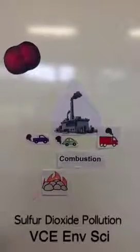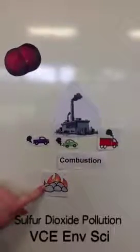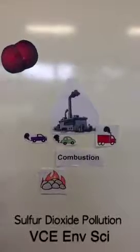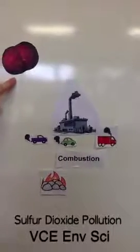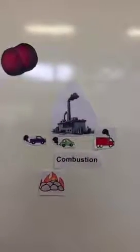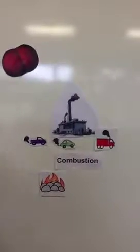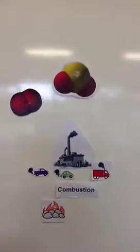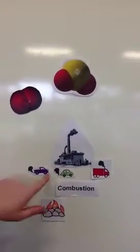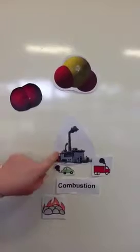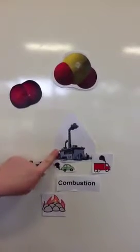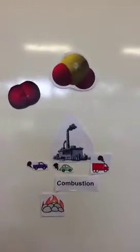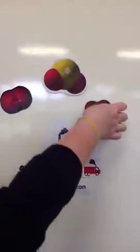When there is sulphur in coal that is burned for electricity production, the sulphur combines with oxygen in the air to produce sulphur dioxide. This is also true for the combustion of oil for transport and industry purposes. This in turn combines with more oxygen to produce sulphur trioxide.